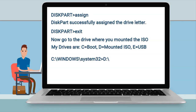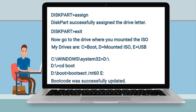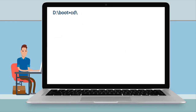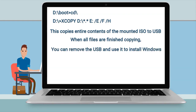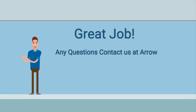Make note of the mounted drive versus the USB. Go to your mounted drive, change to the boot directory, and run the bootsect command, which will make the USB bootable. From there, change to the root of your mounted ISO and run the xcopy command, copying all the contents from your mounted ISO to the USB with those switches. From there you can remove the USB and use it to boot and install Windows 10.